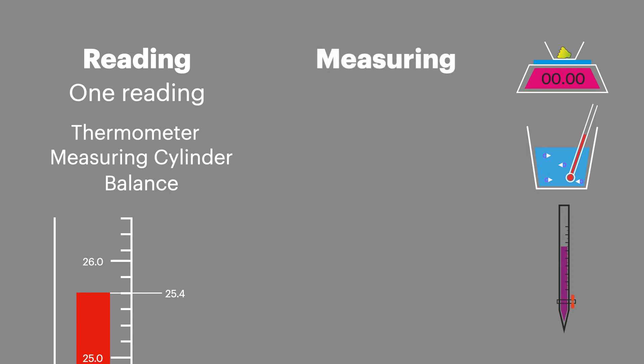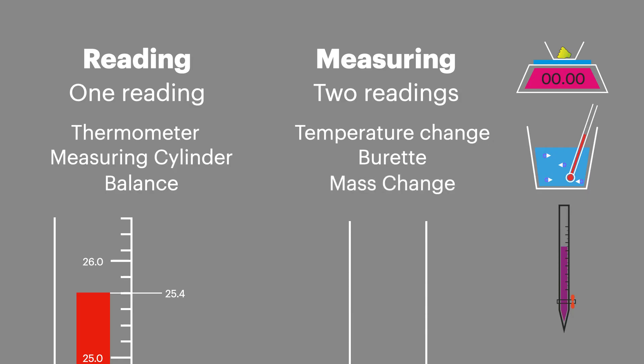However, if it's a measurement requiring two readings, such as a temperature change, a reading from the burette, or a change in mass, all these values involve two readings, so the uncertainty is doubled.